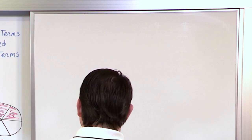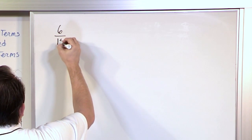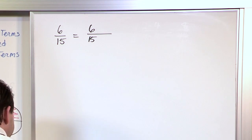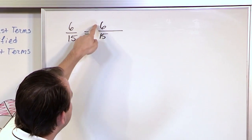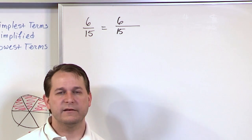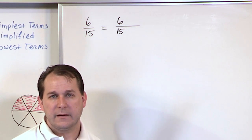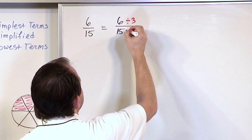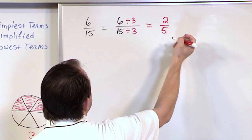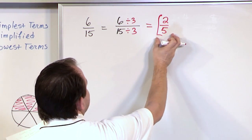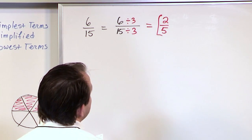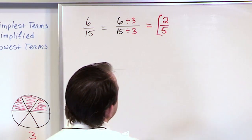Let's get more practice with simplifying fractions. Say we have 6 fifteenths and we want to simplify it. We can't divide by 2 because 15 divided by 2 doesn't give us anything even. But we can divide by 3 — 6 divided by 3 is 2, and 15 divided by 3 is 5. So the answer is 2 fifths. That's the simplest form — you cannot continue dividing because nothing else will make it simpler.